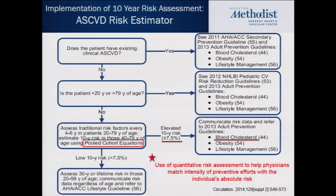One thing the guidelines strongly recommend is getting an idea of the patient's 10-year risk of a cardiovascular event using something called the pooled cohort equation. This is just an equation that gives you a quantitative idea of their 10-year risk, so you can match the intensity of your preventative efforts to the individual patient's risk.